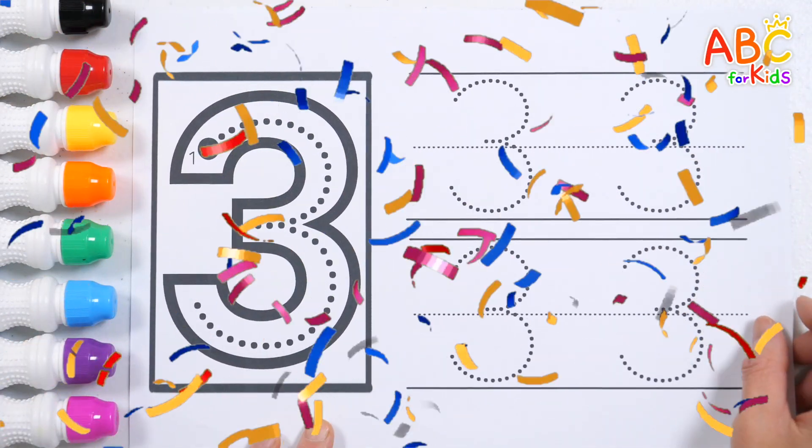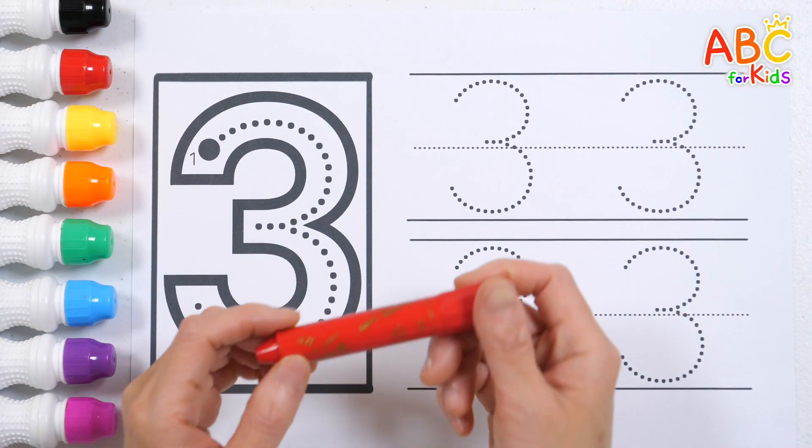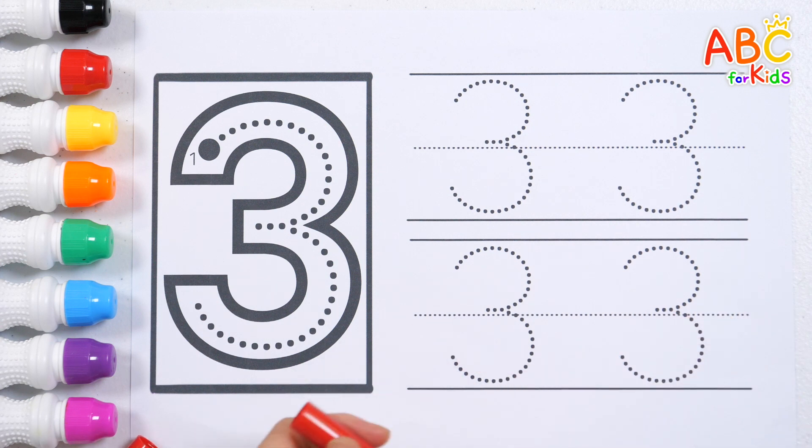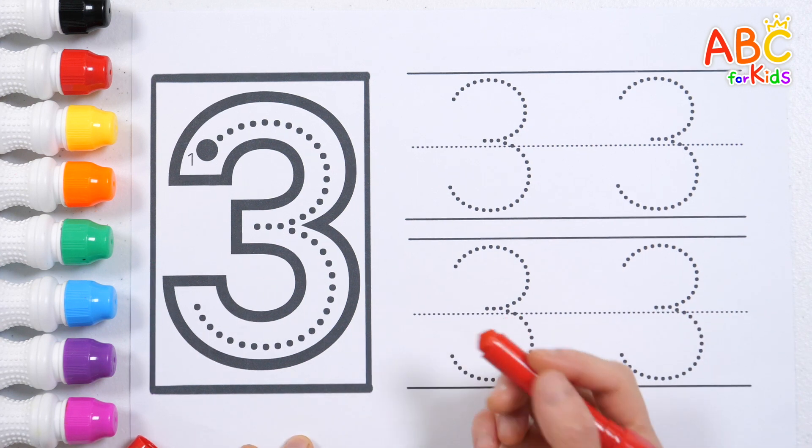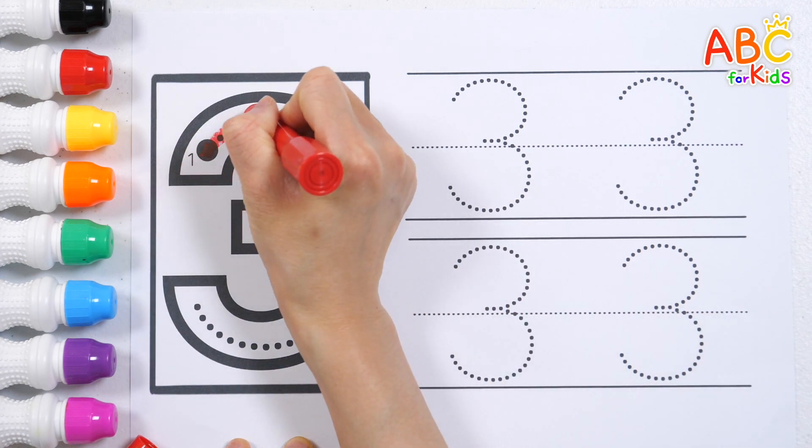Let's learn number 3. Using a red crayon, write the number 3 by tracing the dotted line starting from the circle.